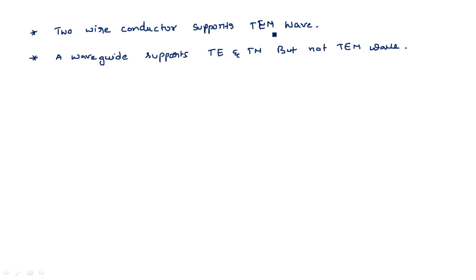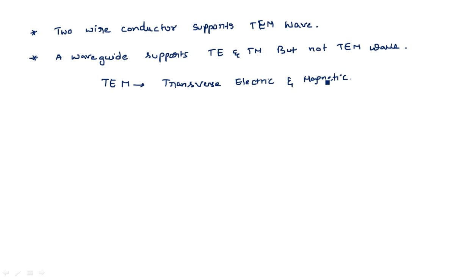TEM stands for Transverse Electric and Magnetic. A TEM wave is one that travels perpendicular to both the electric and magnetic fields. This type of wave can travel through a two-wire conductor and is supported by the transmission line.